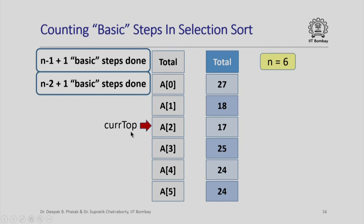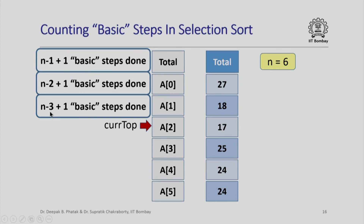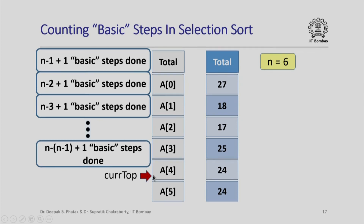When current_top increments to a[2], the pattern gives n-3+1 basic steps, and finally when current_top reaches the last position, n-1+1 basic steps. When current_top reaches the last element, I do not need to do anything else because there is only one element in the unsorted part of the array — and an unsorted array with one element is certainly a sorted array.